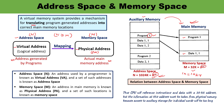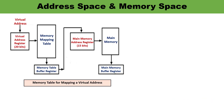This memory mapping table is used for mapping a virtual address. The virtual address is 20 bits and the main memory address register is 15 bits — the same example. The virtual address is translated or mapped to a 15-bit address using this memory mapping table. With the help of this table, the translation is done, and data is made available in the main memory from where it can be copied depending on the CPU's requirement, with the help of memory buffer registers.